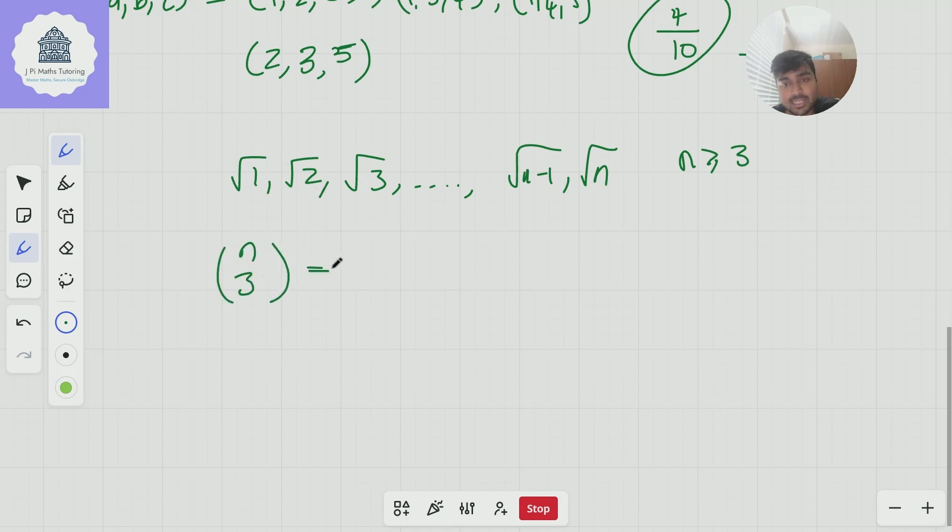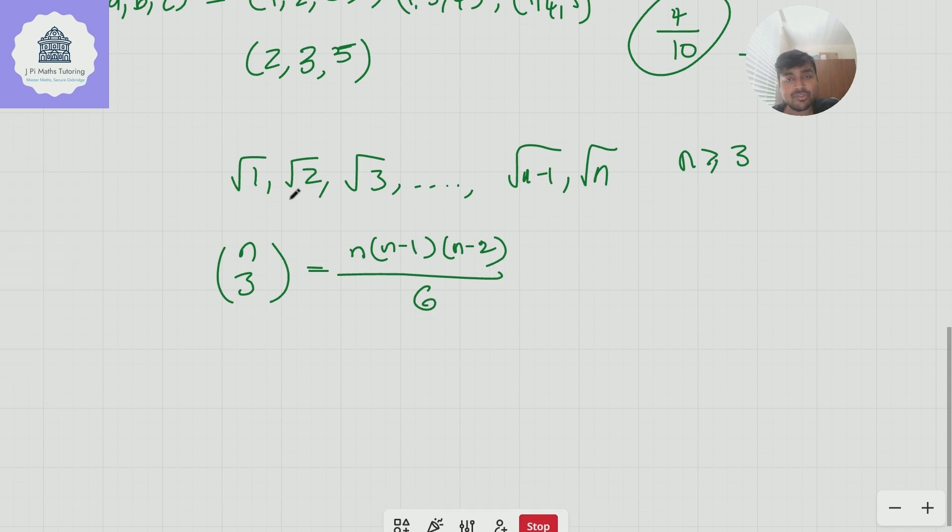Well we can apply kind of the same approach here so there's going to be n choose three ways of selecting three numbers and n choose three is n times n minus one times n minus two over three factorial which is six. Maybe I'll just write that as six.